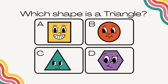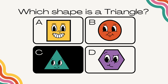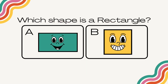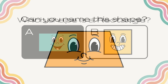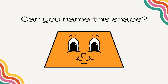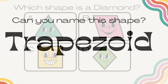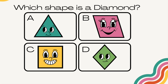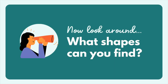Which shape is a triangle? Which shape is a rectangle? Which shape is a triangle? Can you name this shape? Trapezoid. Which shape is a diamond? A diamond!